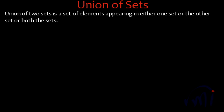Hi, so in this video we are going to learn about the union of two sets. So what is the definition? Definition says union of two sets is a set of elements appearing in either one set or the other set or both sets.